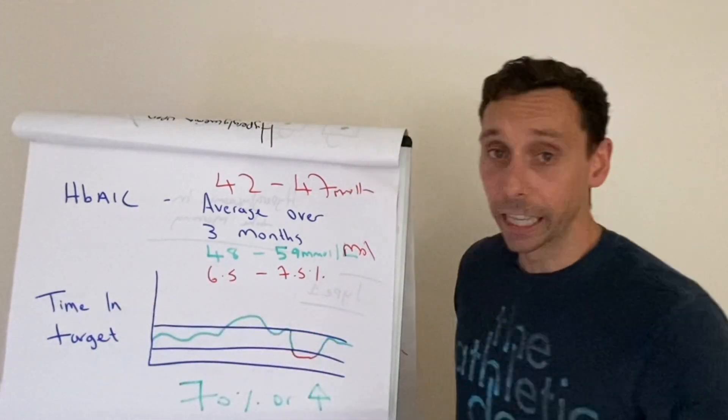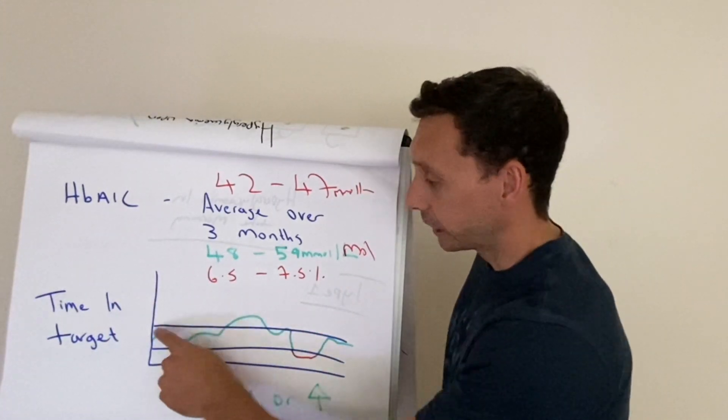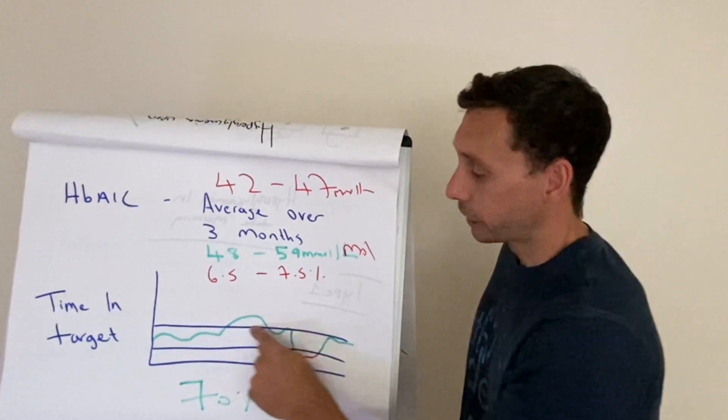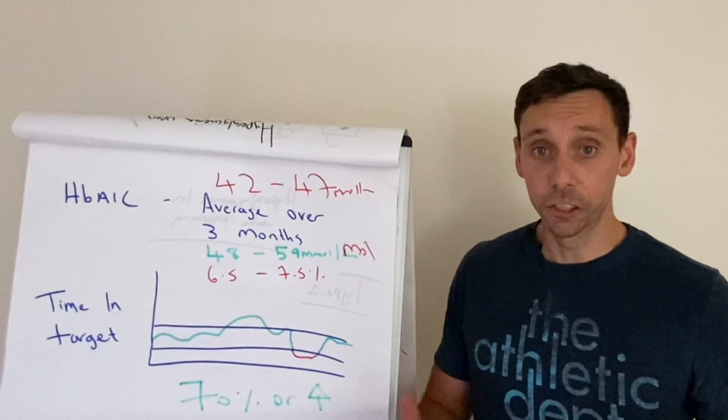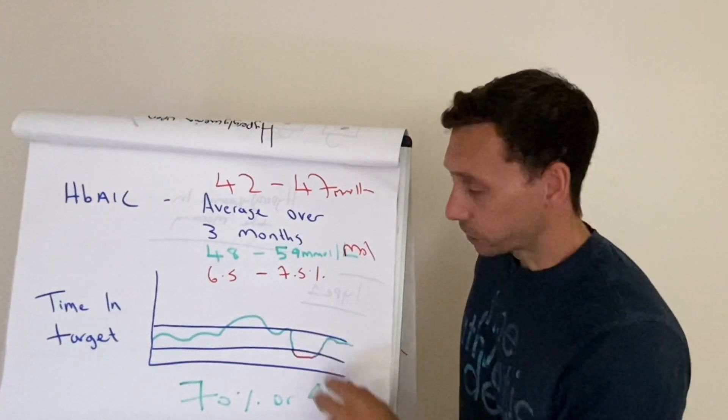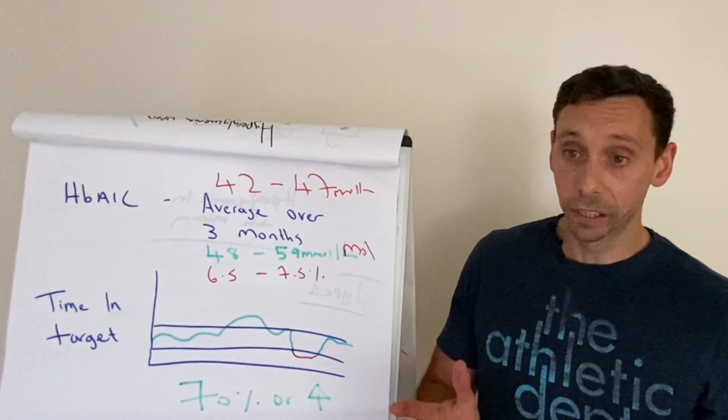Time in target, on the other hand, cannot be skewed like this. We can literally see how often your glucose levels have been between the target range that you've set. For these sensors, it's usually between 4 and 10, which is a good place to live.